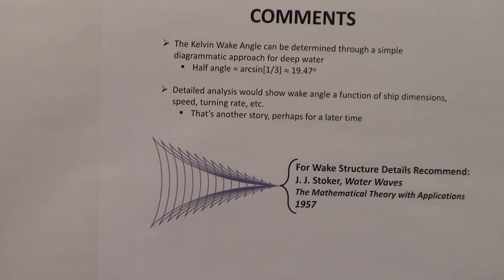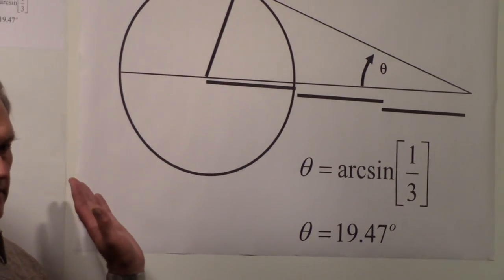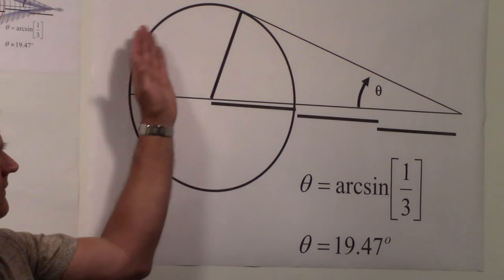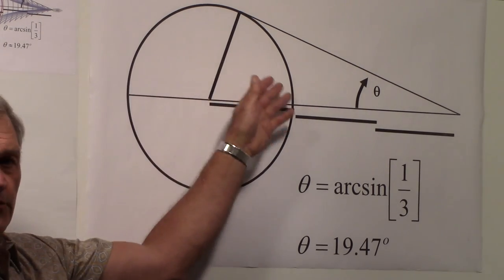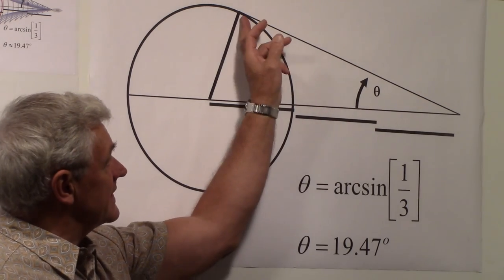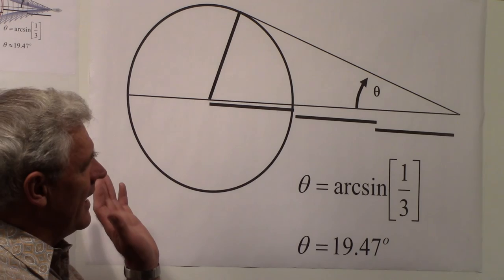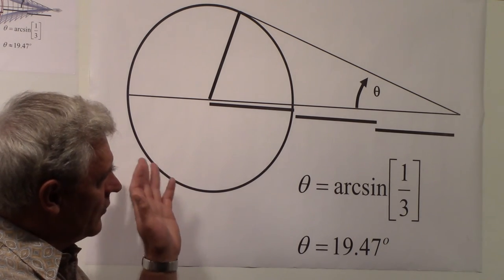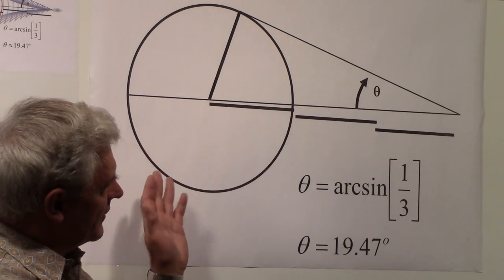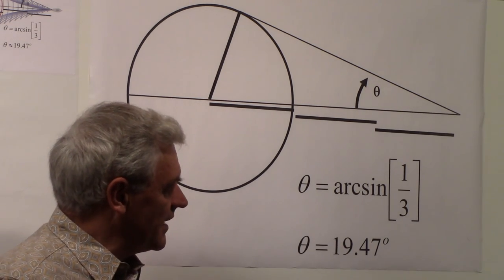In summary, if we come over here, we were able to show that all of the extents from the group velocity, all those points, fell on a circle. The maximum extent of that circle would represent the Kelvin wake angle, the half angle if you want to call it that, what I'm calling theta here. And that theta is the arcsine of 1 over 3.